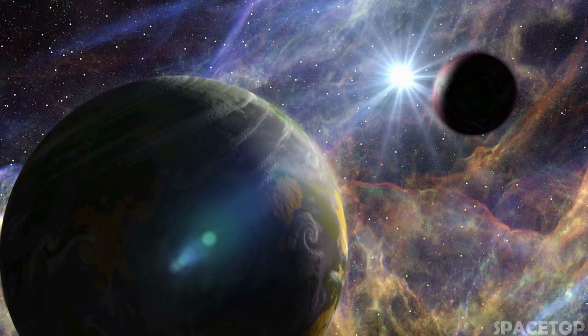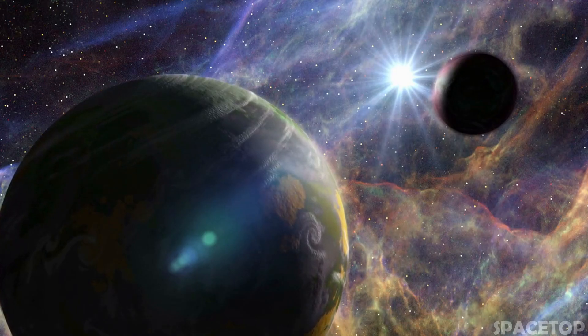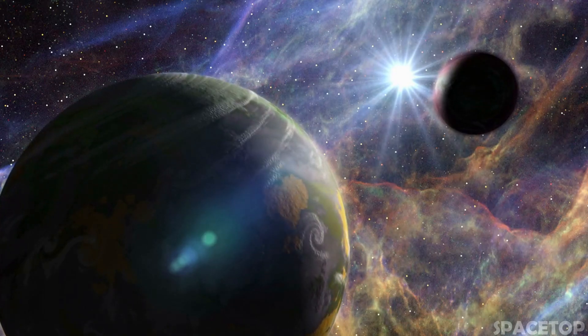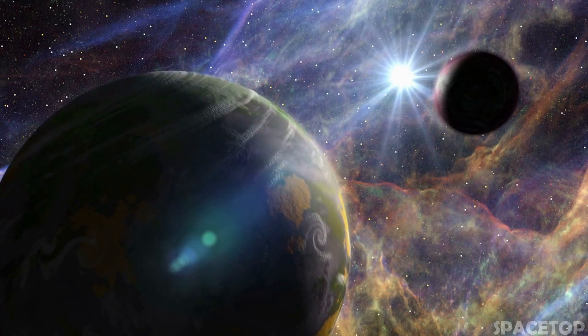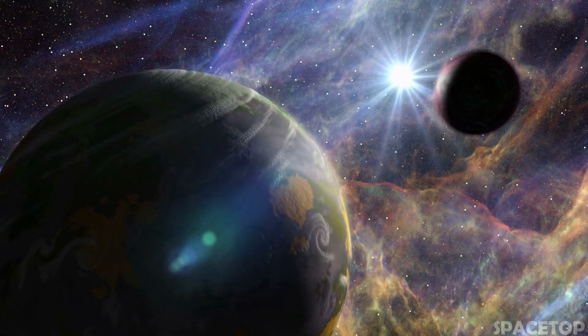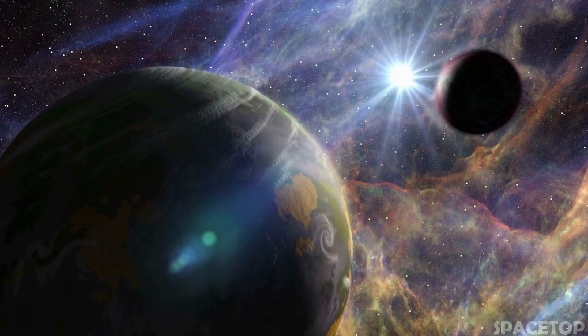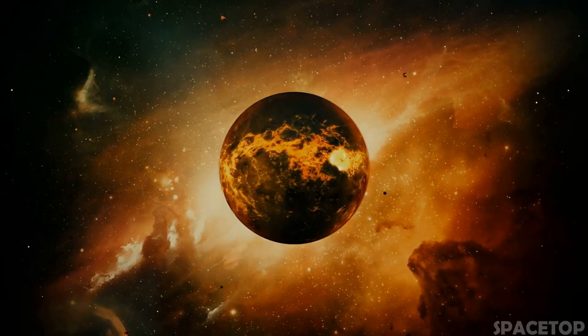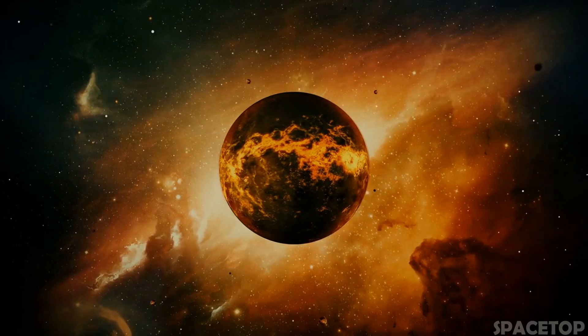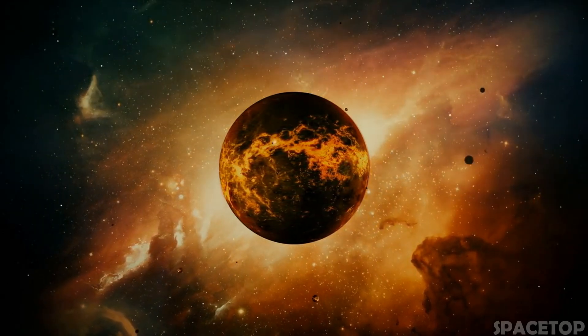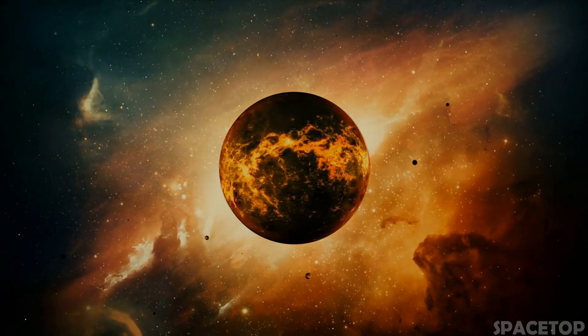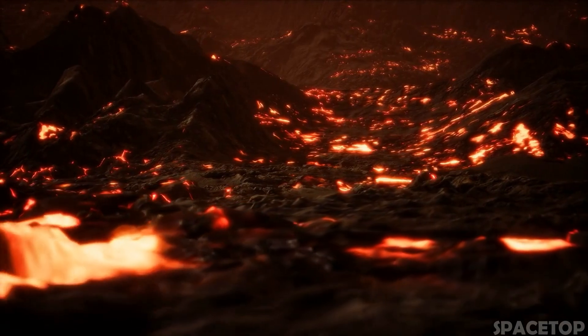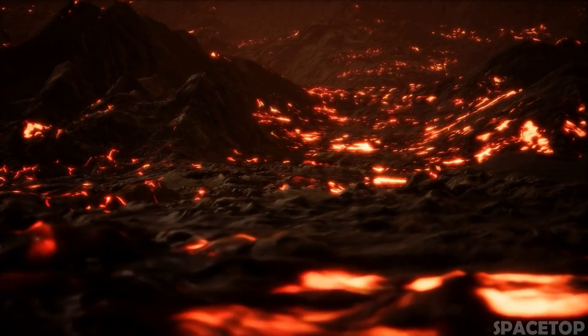These exoplanets are unlike anything we've ever seen in our solar system before. Most of them are significantly larger than the Earth and rotate so close to their stars that they make one revolution every few days. Some of the sides are facing the stars, with temperatures that can melt iron. Others have entire hemispheres covered with oceans of molten liquid rock.